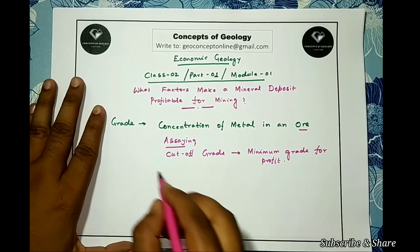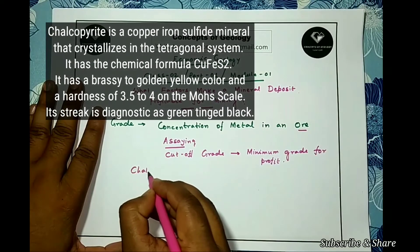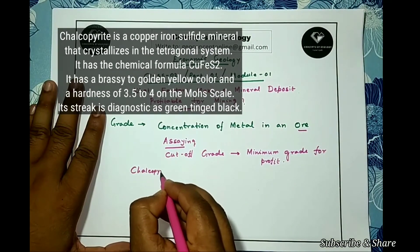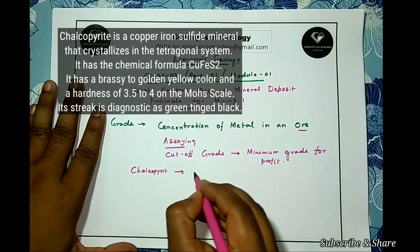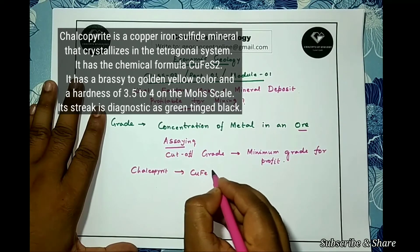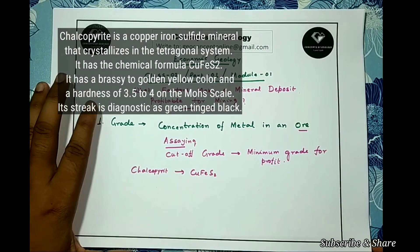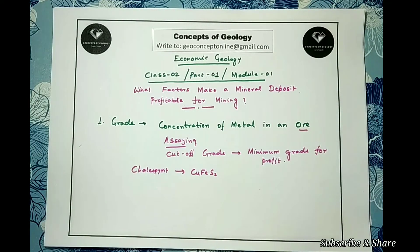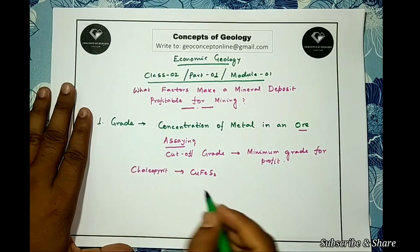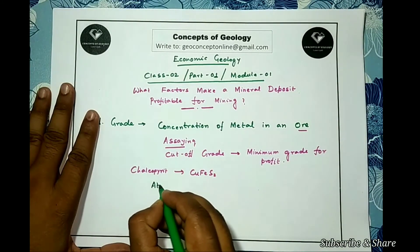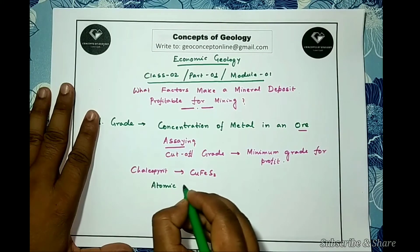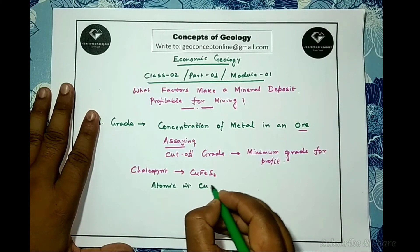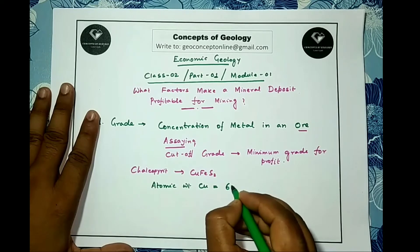Suppose in case of chalcopyrite, CuFeS2, ore of copper. What will be the weight percentage of copper in chalcopyrite? Let us calculate this first. The atomic weight of copper is equal to 63.546 grams per mole.